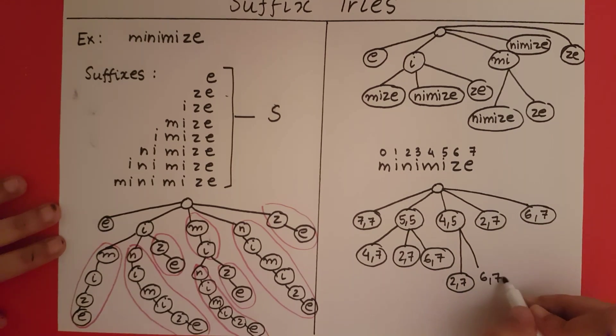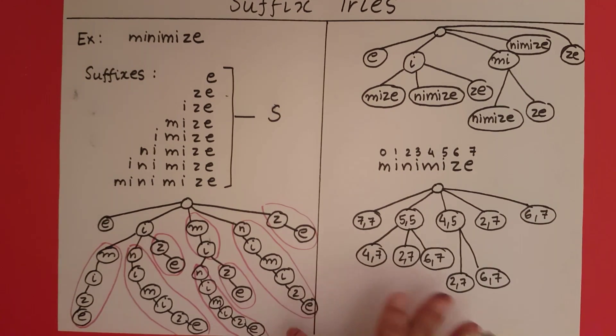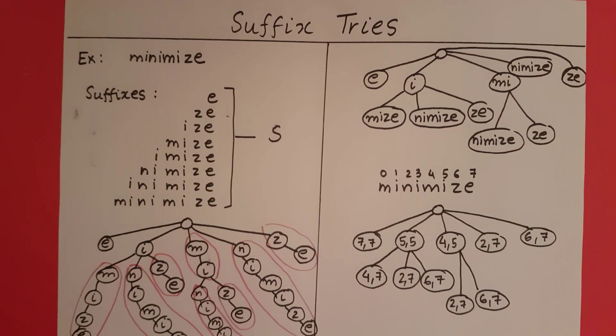With that we have finished representing our compressed trie. So this is how you build a suffix trie for a given word.